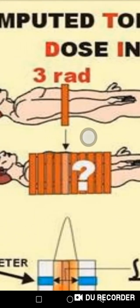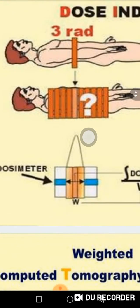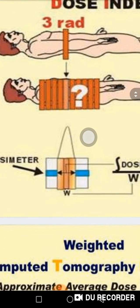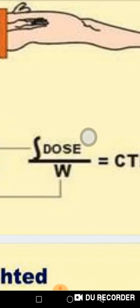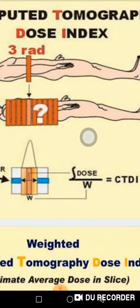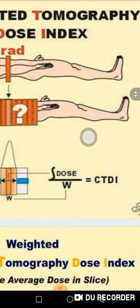Assume I take one slice of the patient's body — this slice is like a section. If I take 20 slices, I want to calculate the dose for all 20. You treat the patient's body as if it were a phantom — a water phantom — since the human body is composed of 70% water. By obtaining the dose in one section and performing integration, I calculate something called the CTDI index — the CT Dose Index — which is the first term used in dose calculation.